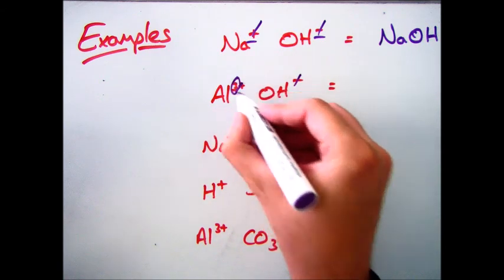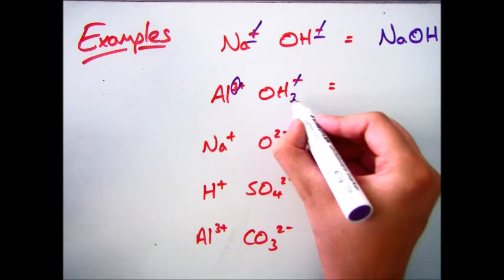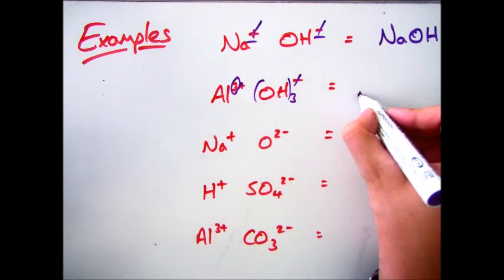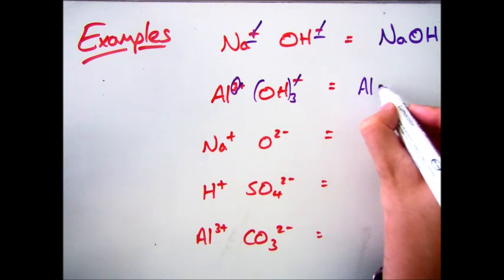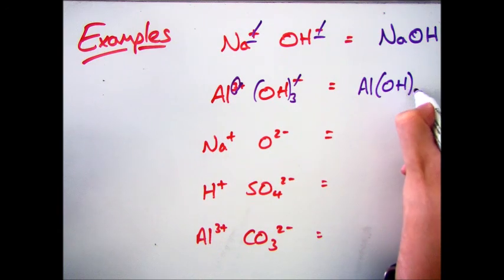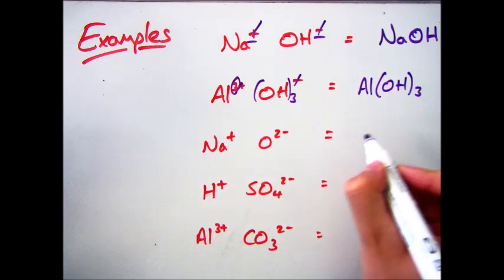Because OH is a compound, we need to put a bracket in. So it's Al in brackets OH 3, making sure that 3 is on the outside of the brackets to show I've got 3 oxygens and 3 hydrogens.